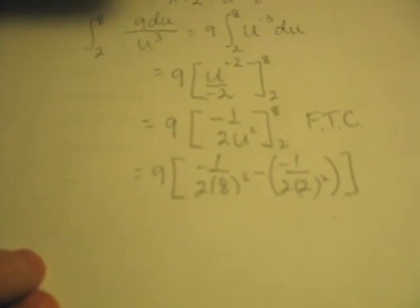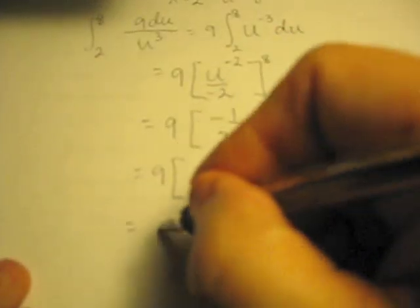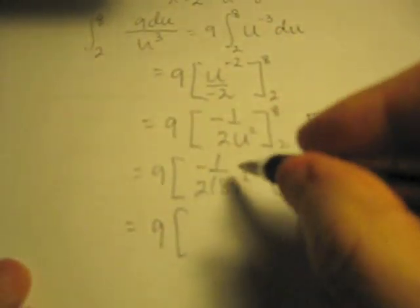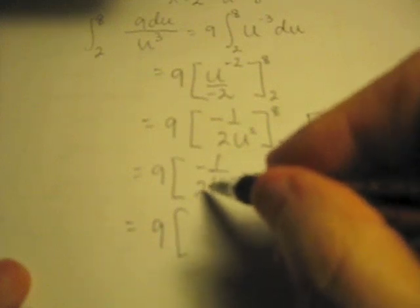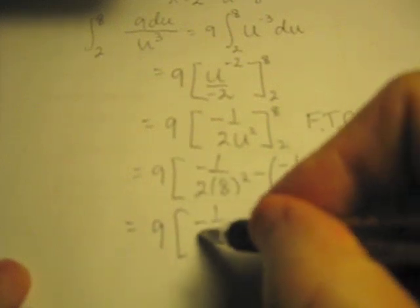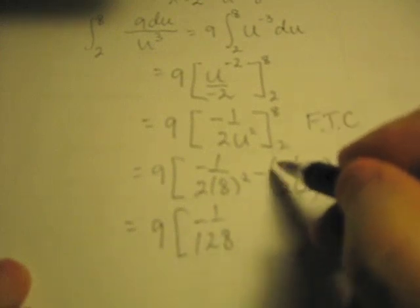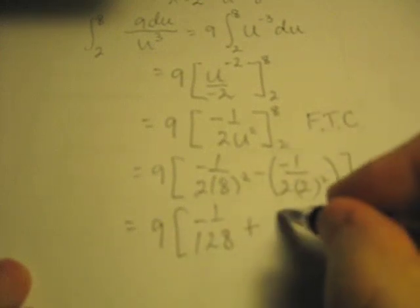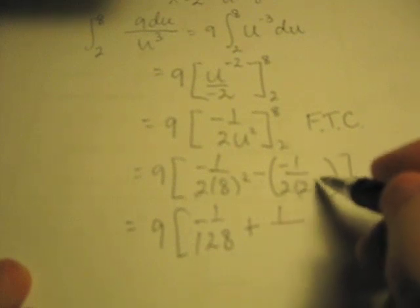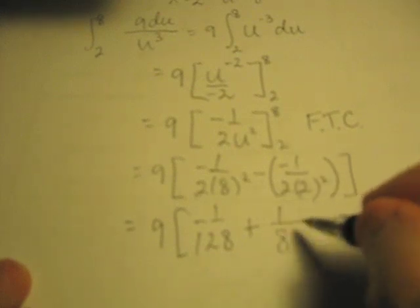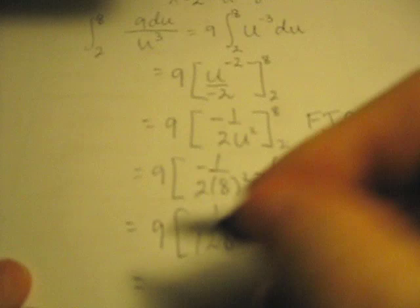And now we go ahead and evaluate this. So this will be negative, now 8 squared is 64, so 2 times 64 is 128, so I get negative 1 over 128. Minus by minus is a plus, and I have 1 over 2 squared is 4, times 2 is 8.